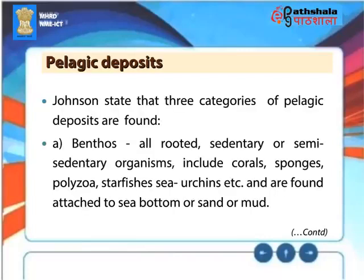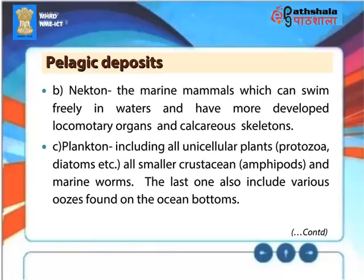Johnson states that three categories of pelagic deposits are found. Benthos includes all rooted, sedentary or semi-sedentary organisms such as corals, sponges, polyzoa, starfishes, sea urchins, etc., and are found attached to the sea bottom or sand or mud. Nectar refers to marine mammals which can swim freely in water and have more developed locomotory organs and calcareous skeletons. Plankton includes all unicellular plants, protozoa, diatoms, etc., all smaller crustaceans, amphipods, and marine worms. The last category also includes various oozes found on the ocean bottoms.